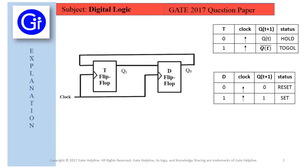Now we will see the explanation to this question. We are given a combination of T and D flip-flops where the input of the D flip-flop is the output of the T flip-flop, and the T flip-flop has input as the output of the D flip-flop, which is Q0.